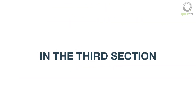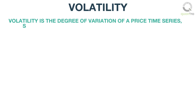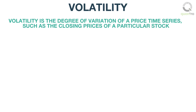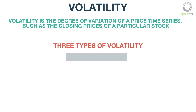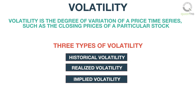In the third section, we learned about volatility. Volatility is the degree of variation of a price-time series, such as the closing prices of a particular stock. There are three types of volatility: historical volatility, realized volatility, and implied volatility. We understood each of them and also learned the method to calculate the historical volatility.